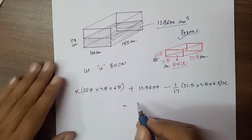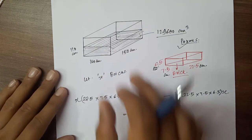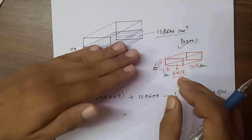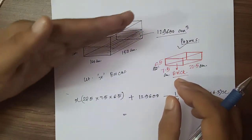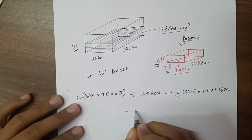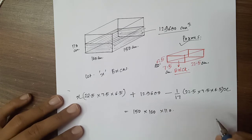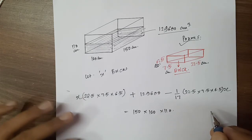Total volume, this will equal to, because we have so many bricks that the whole tank will fill. How much? The whole tank: 150 into 120 into 110. This will solve and we will get x.